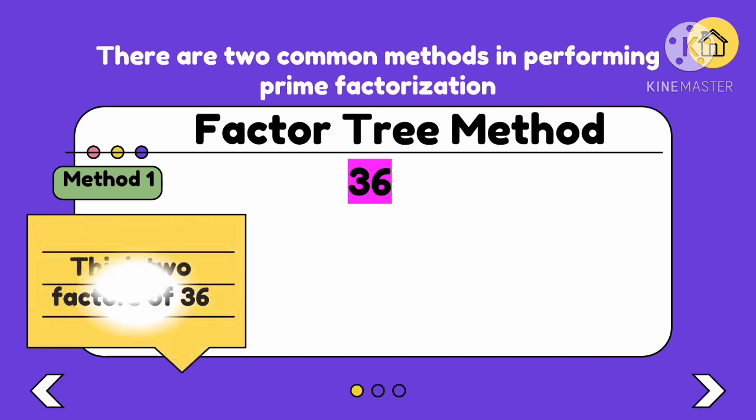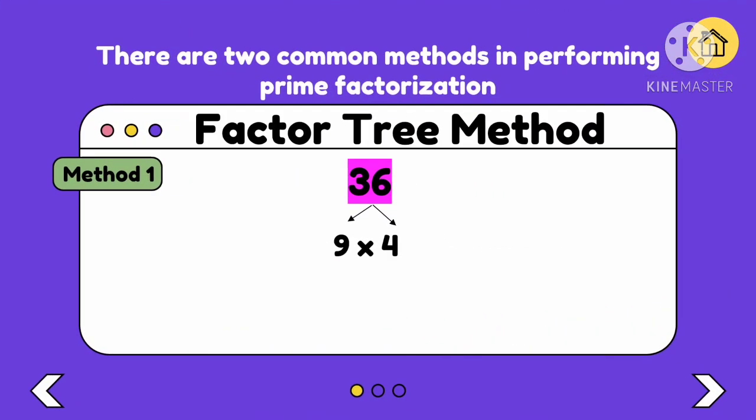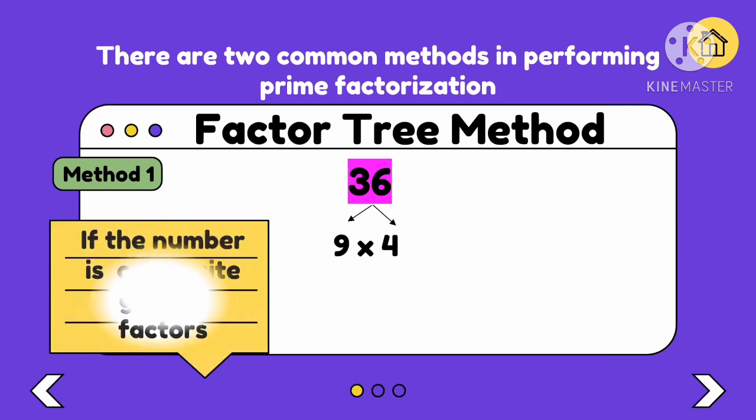Let's have an example: 36. First step, we think of 2 factors of 36 since 36 is a composite number, so it has many factors. The 2 pairs of factors we'll get first is 9 times 4. After we identify the factors of 36, we differentiate whether the factor is prime or composite. If the number is composite, get the factors. Since 9 and 4 are both composite numbers, we need to get the factors of 9 and 4.